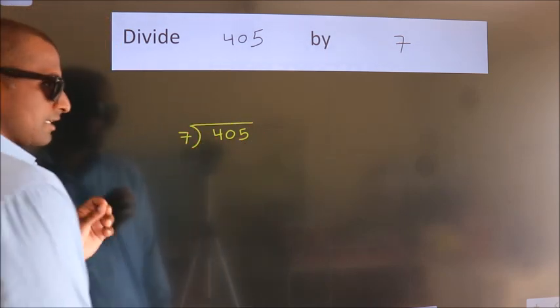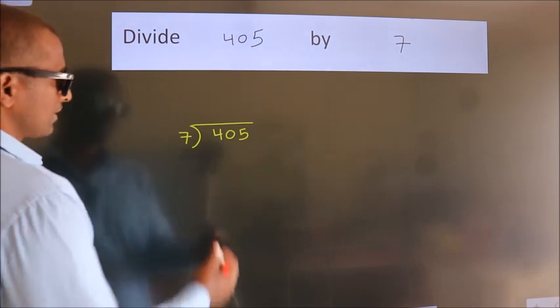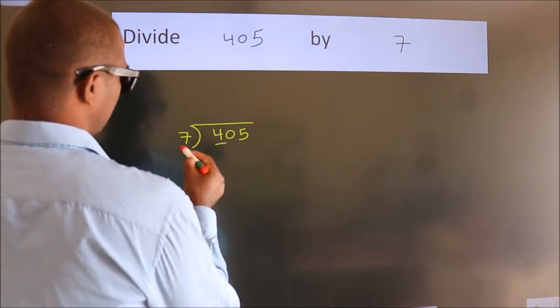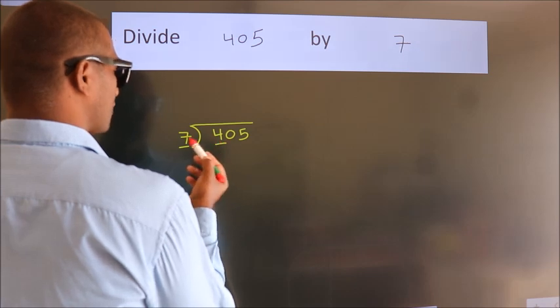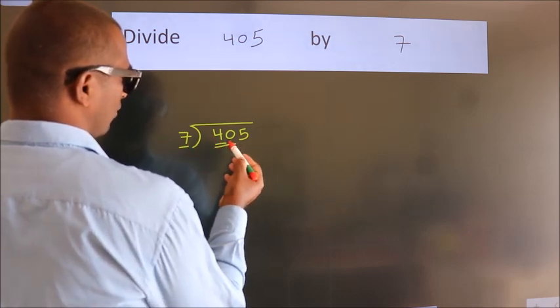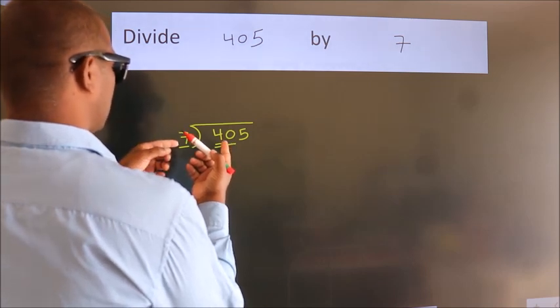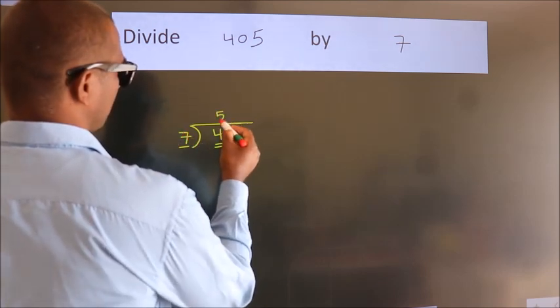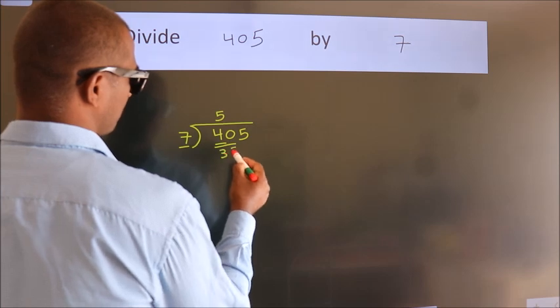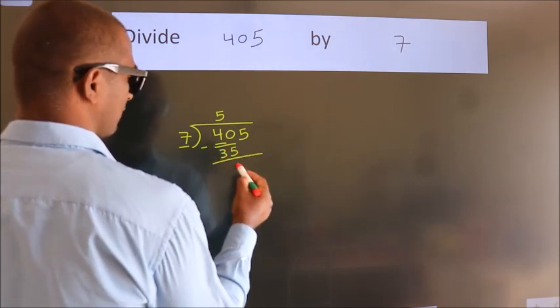This is your step 1. Next, here we have 4, here 7. 4 is smaller than 7, so we should take two numbers, 40. A number close to 40 in the 7 table is 7 fives, 35. Now we should subtract, we get 5.